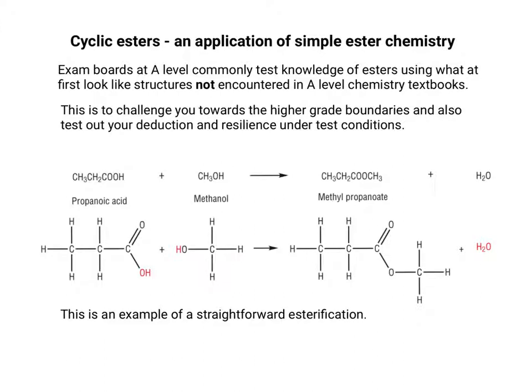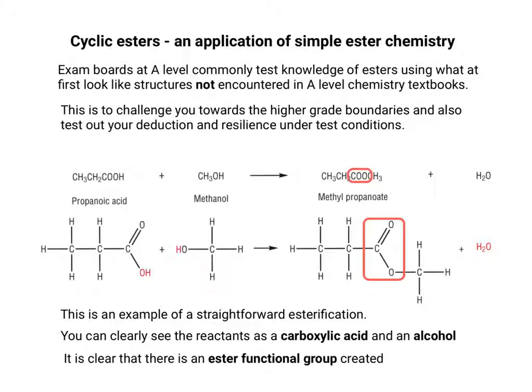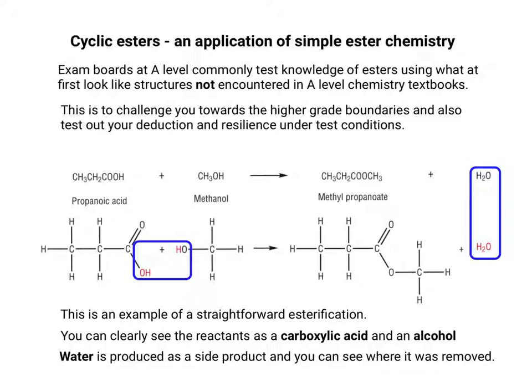So this is an example of straightforward esterification. It's clear what the reactants are. You can see the ester functional group produced in both versions of the equation — the displayed version and also the structural version. You can also see where the H₂O was removed and where it's made as a side product.